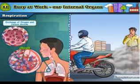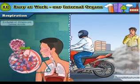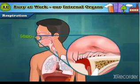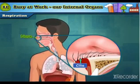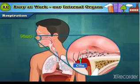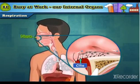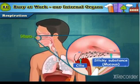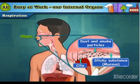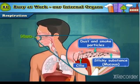The inner lining of the nose has thin hair-like structures called cilia. The air gets filtered through them. There is also a layer of a sticky substance called mucus. The dust and smoke particles present in the air stick to the mucus. Thus, harmful substances in the air cannot reach the lungs.